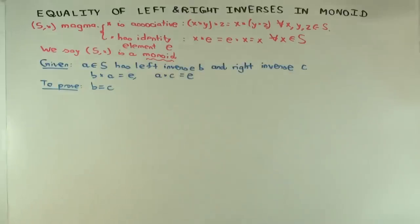Now, we have already seen that if there's a left identity and a right identity, they're equal, right? Why? How did we do that?